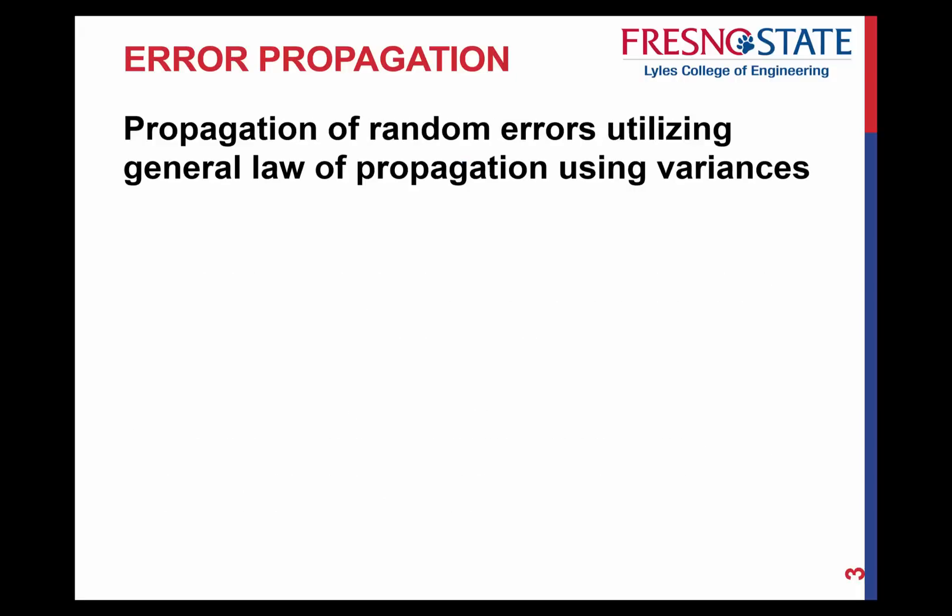The propagation of random errors utilizes the general law of propagation, but this time it uses variances. If you remember, we went back through and calculated the standard deviation, and figured out that if we need the variance, it's just the square of the standard deviation. Propagation uses variances, which is why we discussed it earlier in our previous slides and lectures.